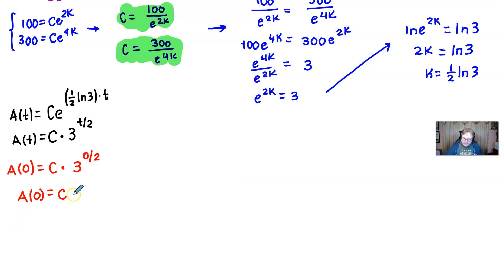So c is just simply 100 divided by e to the 2 times our k is 1/2 ln of 3. So you can see that the 2 and the 1/2 will cancel. And you have 100 over e to the ln of 3, which the e and the ln will go away. And you have 100 over 3.